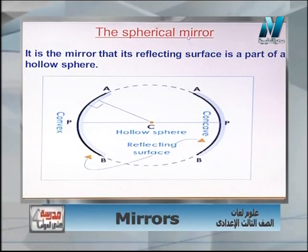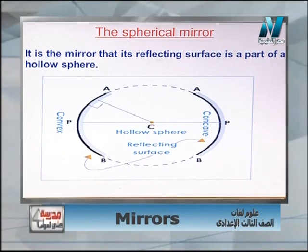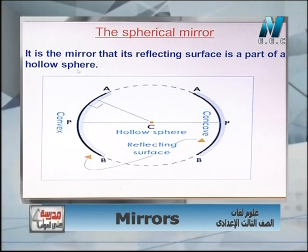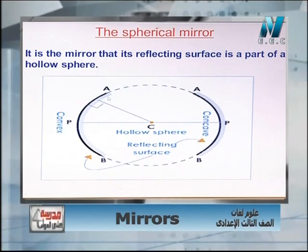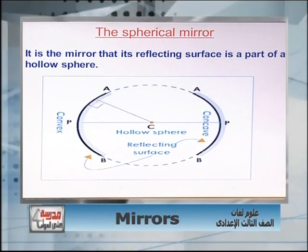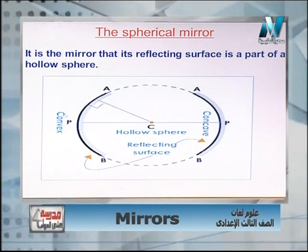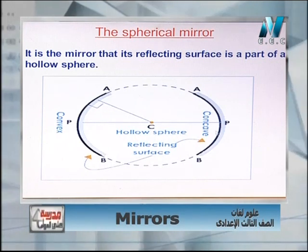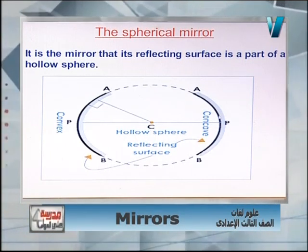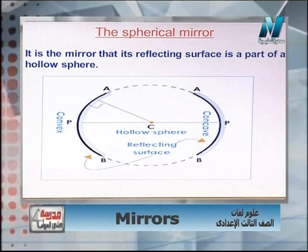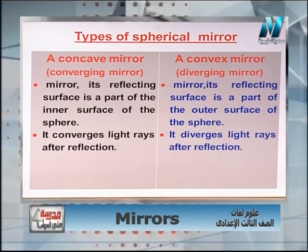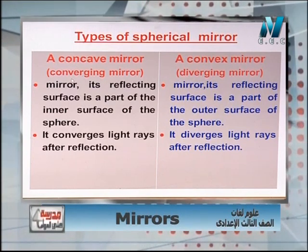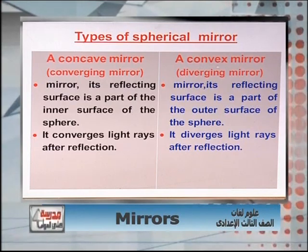This is the definition of the spherical mirror: it is the mirror whose reflecting surface is a part of a hollow sphere. As we see in the diagram, the convex mirror has its reflecting surface on the outside, while the concave mirror has its reflecting surface on the inside. In comparison: the concave mirror is called the converging mirror, and the convex mirror is called the diverging mirror.